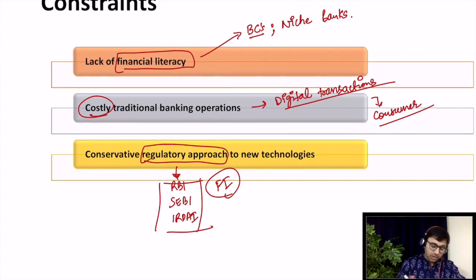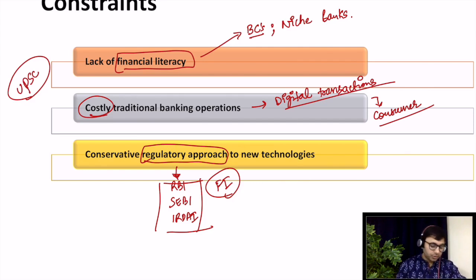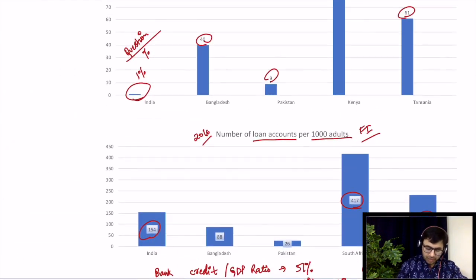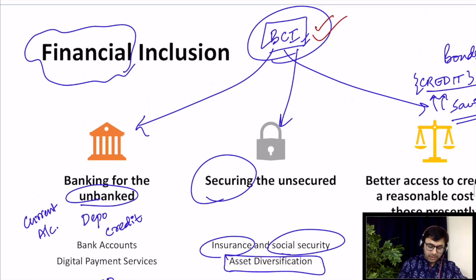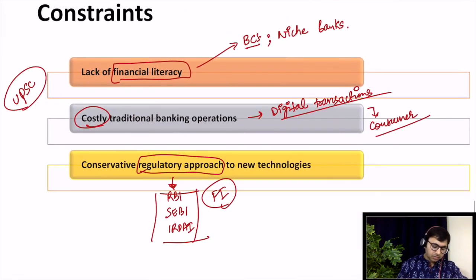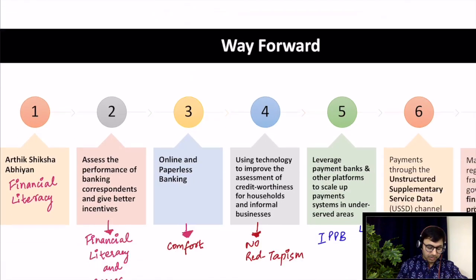These are the three major constraints. Note that these constraints are more important from a UPSC point of view and are very highly expected questions in the future. For RBI, they are very generic in nature — RBI would instead focus on facts, schemes, or what exactly is financial inclusion, i.e., BCI. The constraints are analytical in nature, so you just need to understand them; you don't have to memorize them.